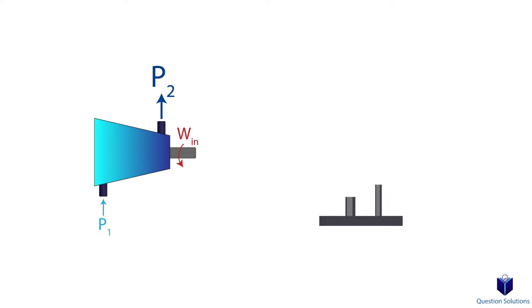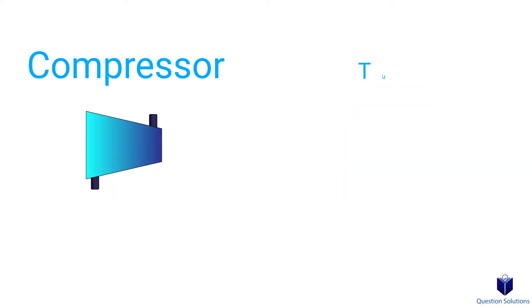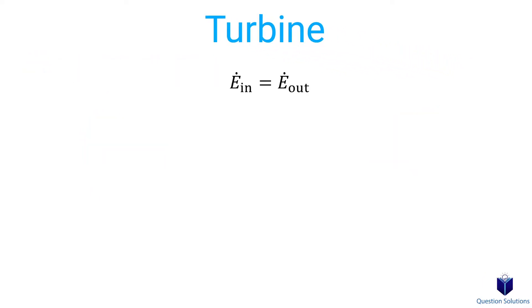Pumps and fans pretty much work in the same way, with a pump just handling liquids instead of gases. So let's discuss the characteristics of these two types of steady flow devices. Remember that for a steady flow system, our energy balance equation is this. The rate of energy in must equal the rate of energy out. We can expand this to include all the types of energy associated with a steady flow system, like this.